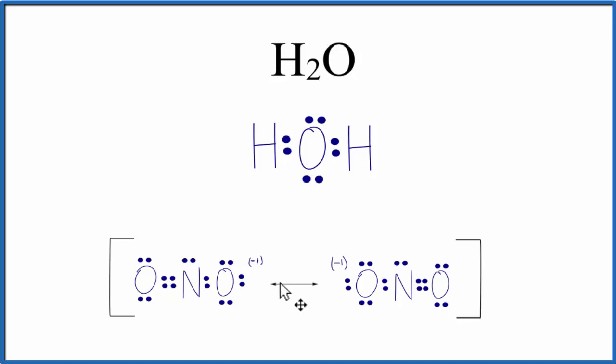Note too with resonance structures, this arrow here—they aren't switching back and forth. It's really the same representation of one molecule. It would just be an average of these two structures.